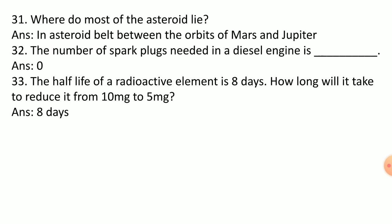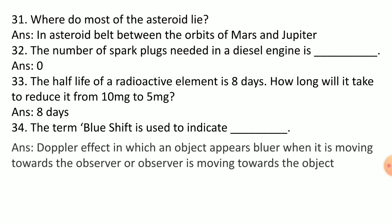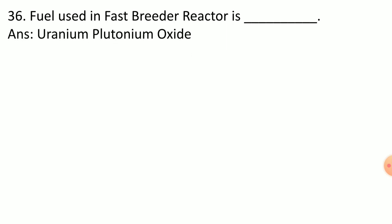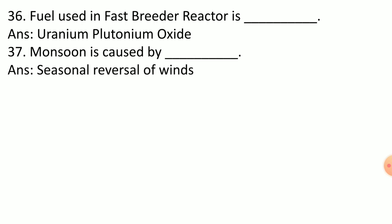The term blue shift is used to indicate Doppler effect in which an object appears blue when it is moving towards observer or observer is moving towards the object. Kilowatt-hour is the unit of energy. Fuel used in fast breeder reactor is uranium-plutonium oxide. Monsoon is caused by seasonal reversal of winds.